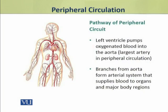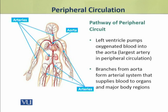In the peripheral circuit, the left ventricle pumps oxygenated blood into the aorta, which is the largest artery in peripheral circulation. Branches from the aorta form the arterial system that supplies blood to organs and major body regions.